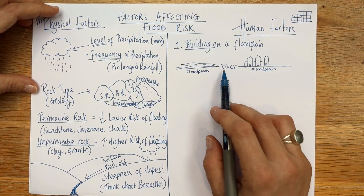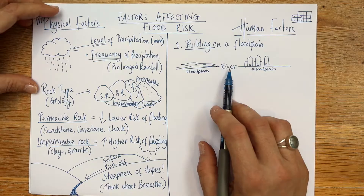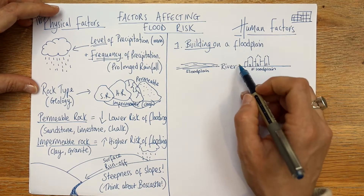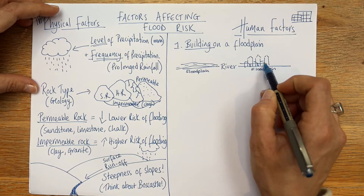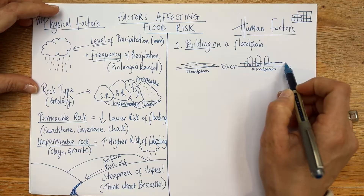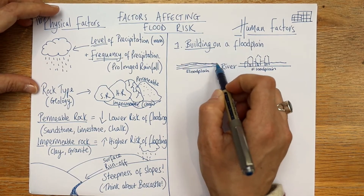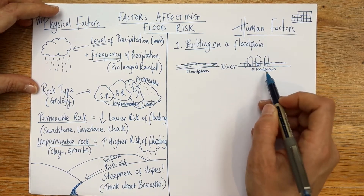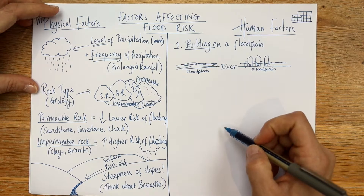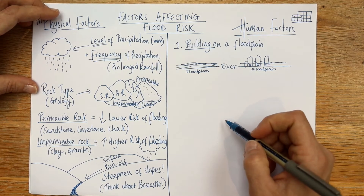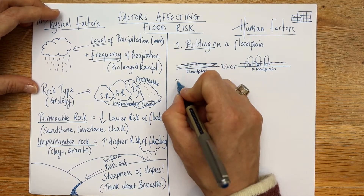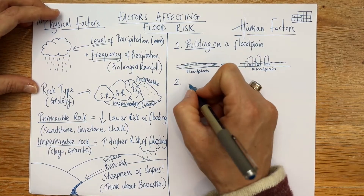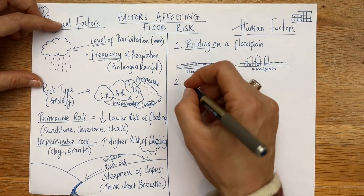The river is naturally going to flood, and our road and houses are going to end up underwater. That's not the river's fault — it's the fact that we've built on the floodplain.